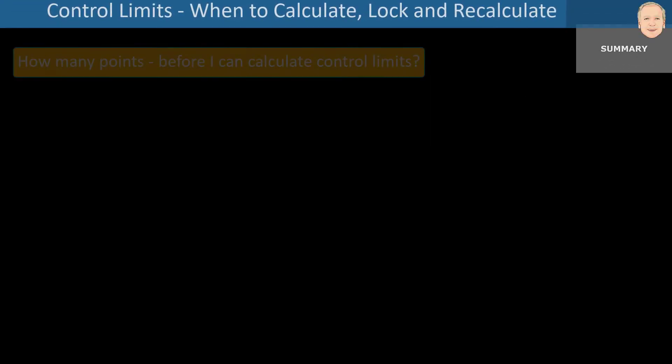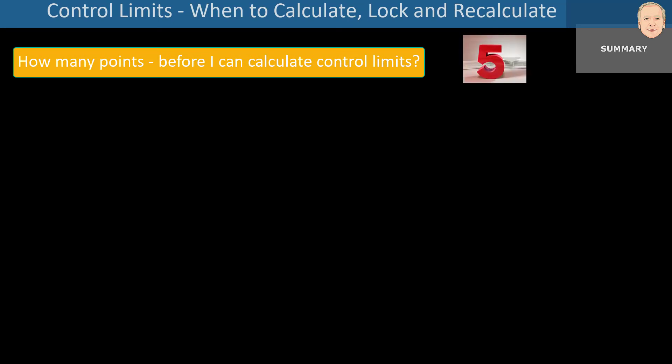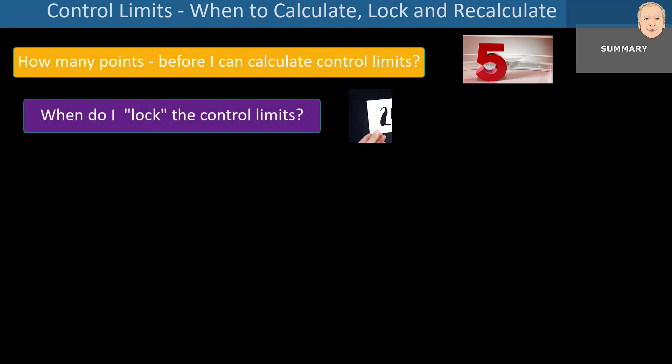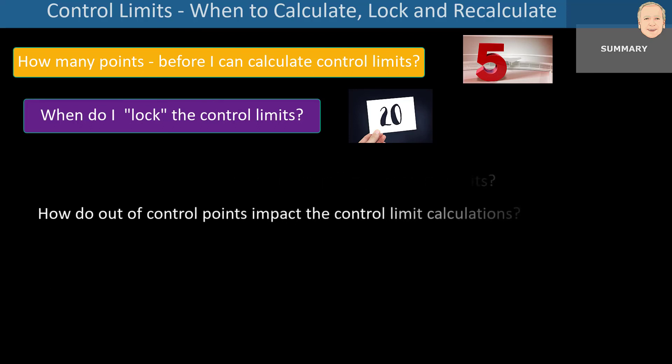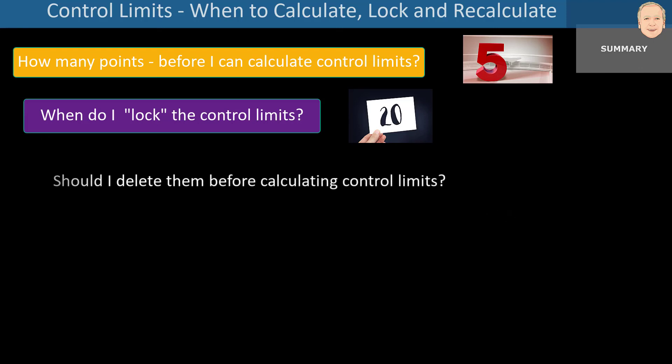So what did we take a look at in this video? We took a look at when you calculate control limits, how many points you need. All you need is five. When do you lock them? After 20 data points. How many points have to be in control before you have good control limits? They're good control limits right off the bat.